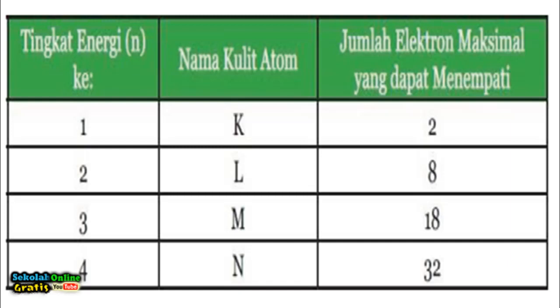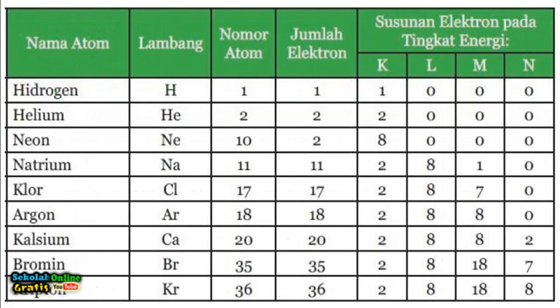First energy level, the name of the atomic shell K, the maximum number of electrons that can occupy it equals 2. The second energy level, the name of the atomic shell L, the maximum number of electrons that can occupy it equals 8. The third energy level, the name of the atomic shell is M, the maximum number of electrons that can occupy it equals 18. The fourth energy level, the name of the atomic shell is N, the maximum number of electrons that can occupy it equals 32.